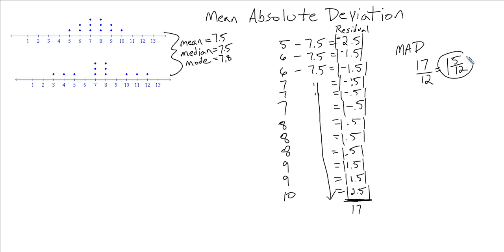So what does this mean? It means that for this set of data, on average our data varied by approximately just a little less than 1.5 — somewhere in the range just a little shy of 9 and just a little shy of 6 from the mean. Our mean absolute deviation says that our data on average only deviated that far. If we have a larger MAD, that means the data deviated much further. Let's go ahead and find the mean absolute deviation for the other set of data.